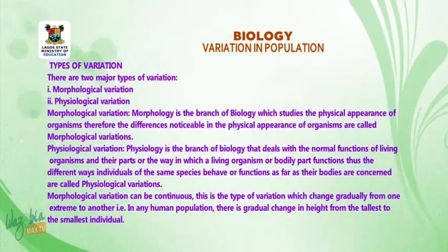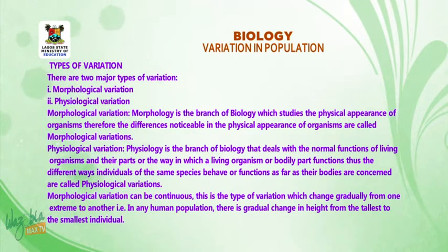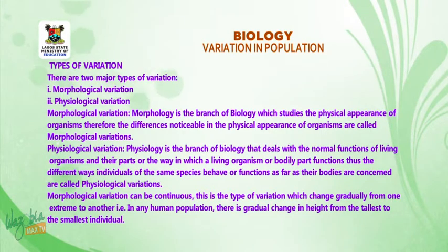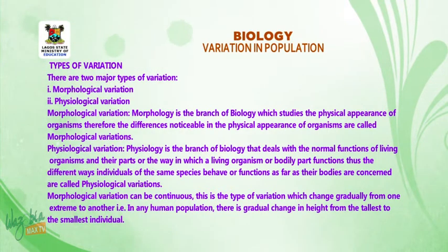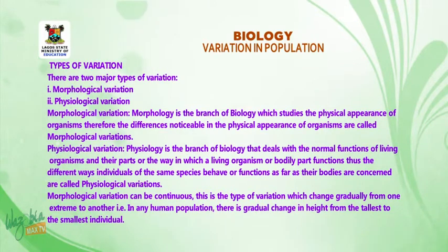Types of variation. There are two major types of variation: morphological variation and physiological variation. Morphology is the branch of biology which studies the physical appearance of organisms. Therefore, the differences noticeable in the physical appearance of organisms are called morphological variation.